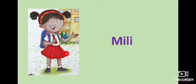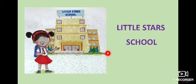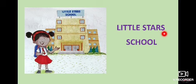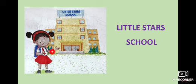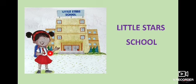Now look at here. What's the name of the girl? The name of the girl is Mili. Her school is Little Star School. What's the name of her school? Little Star School. My school name is Seventh Day Adventist School. Very good. Good children.